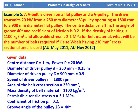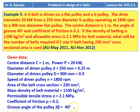Given data: center distance C = 1 m, power = 20 kW. Diameter of driver pulley d = 250 mm = 0.25 m. Diameter of driven pulley D = 900 mm = 0.9 m. Speed of driver pulley n = 1800 RPM. Area of belt cross-section = 230 mm². Mass density = 1100 kg/m³. Permissible tensile stress σ = 2.1 MPa. Coefficient of friction μ = 0.2. Groove angle 2β = 40°.